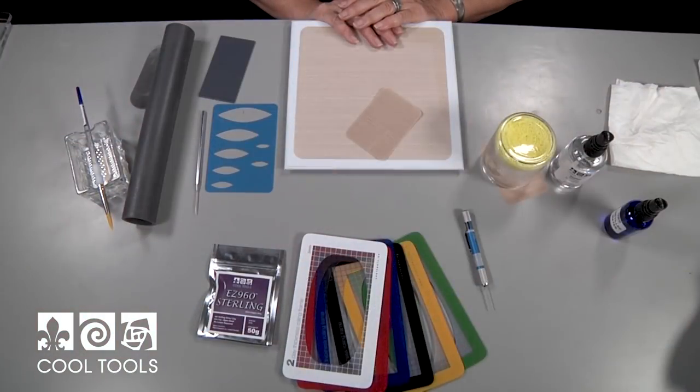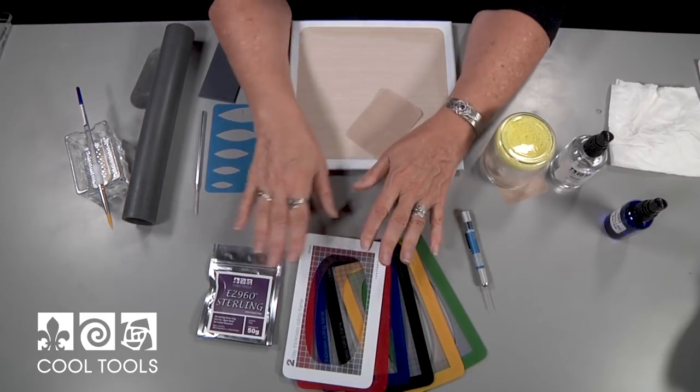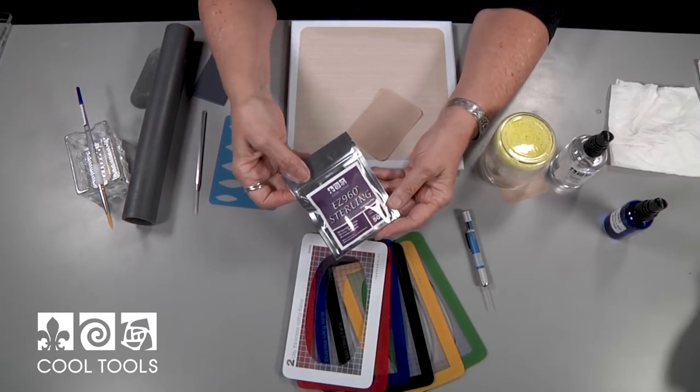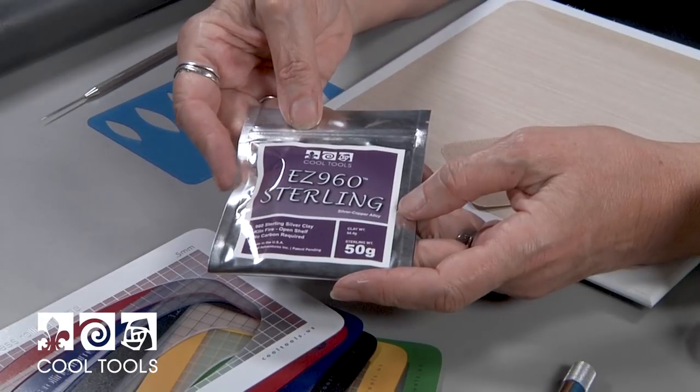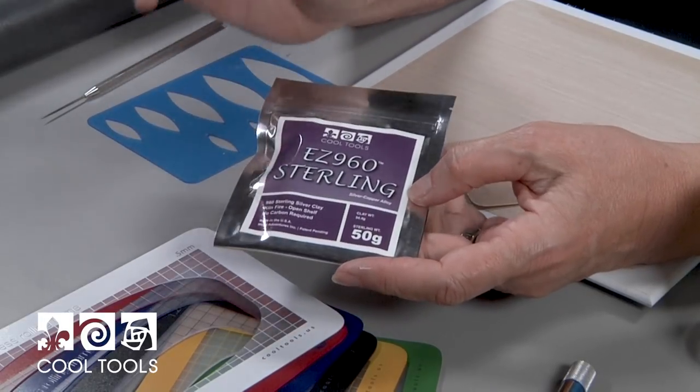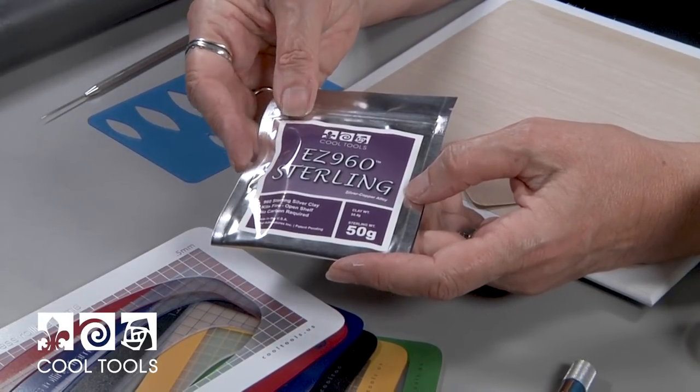Let's get started. So now we're going to make those rolled edged earrings and these are the tools and supplies you're going to want to have on hand. We're going to work with EZ960 sterling silver clay. I like this clay for this type of project because it's nice and flexible and you want good flexibility in your clay to do the rolled edges.